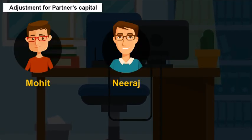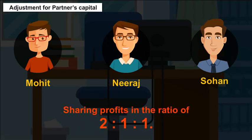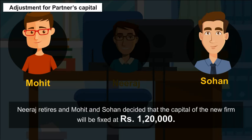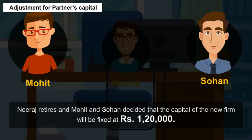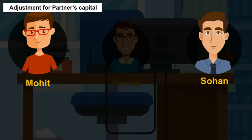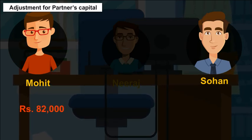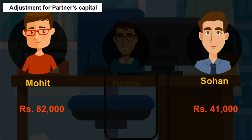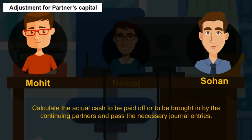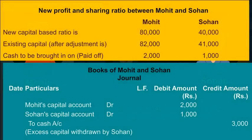Example: Mohit, Neeraj and Sohan are partners in a firm sharing profits in the ratio of 2:1:1. Neeraj retires and Mohit and Sohan decide that the capital of the new firm will be fixed at Rs. 1,20,000. The capital accounts of Mohit and Sohan show a credit balance of Rs. 82,000 and Rs. 41,000 respectively after all adjustments. Calculate the actual cash to be paid off or brought in by the continuing partners and pass the necessary journal entries.